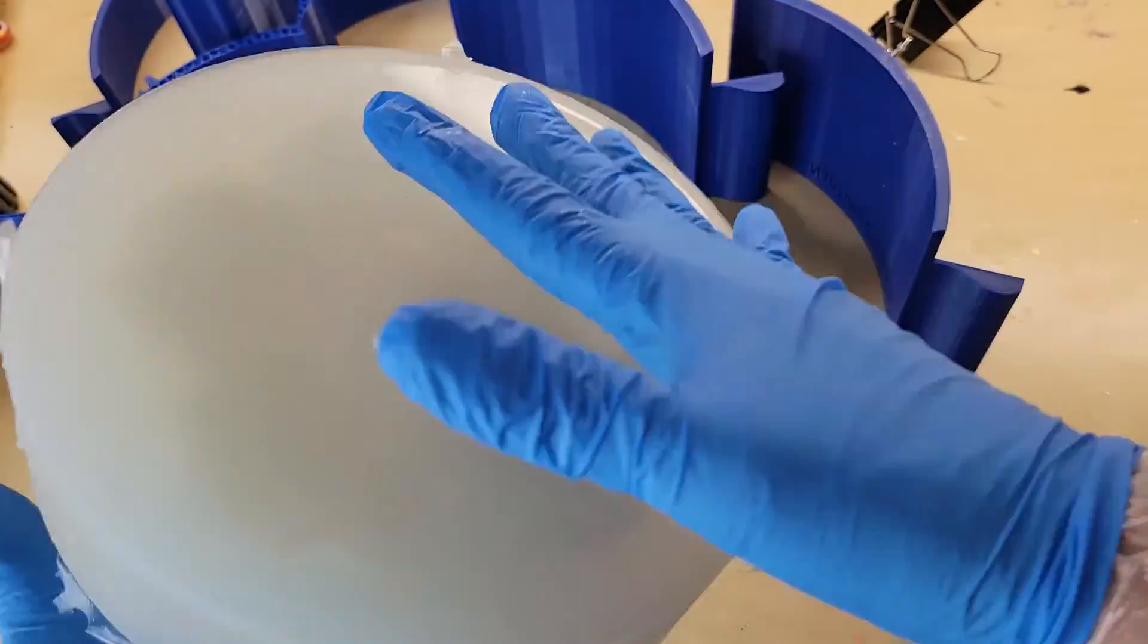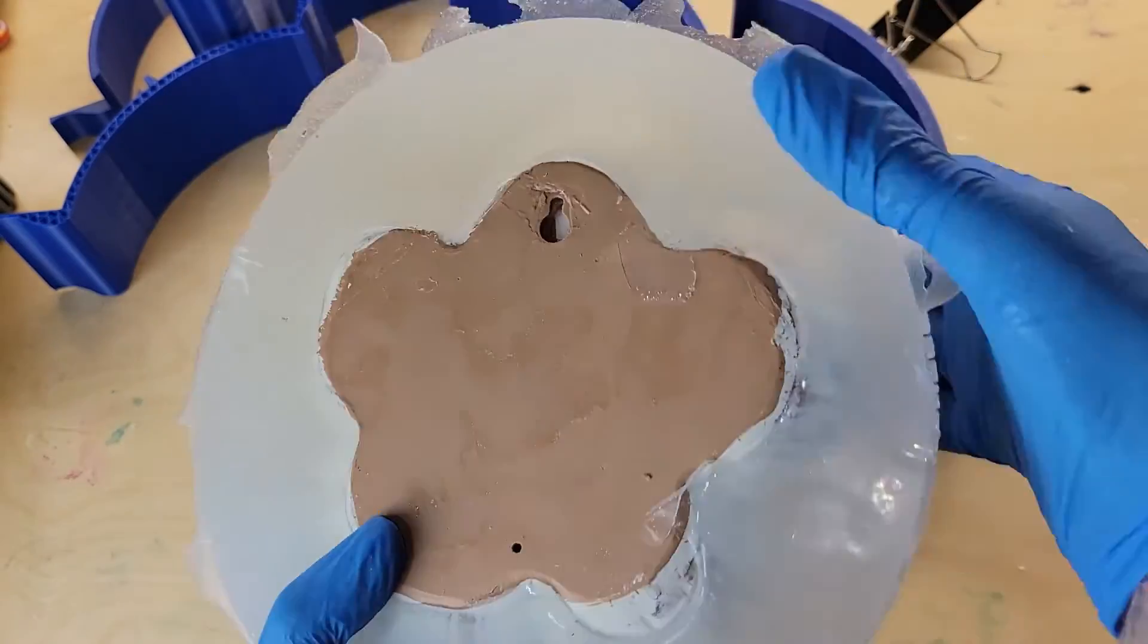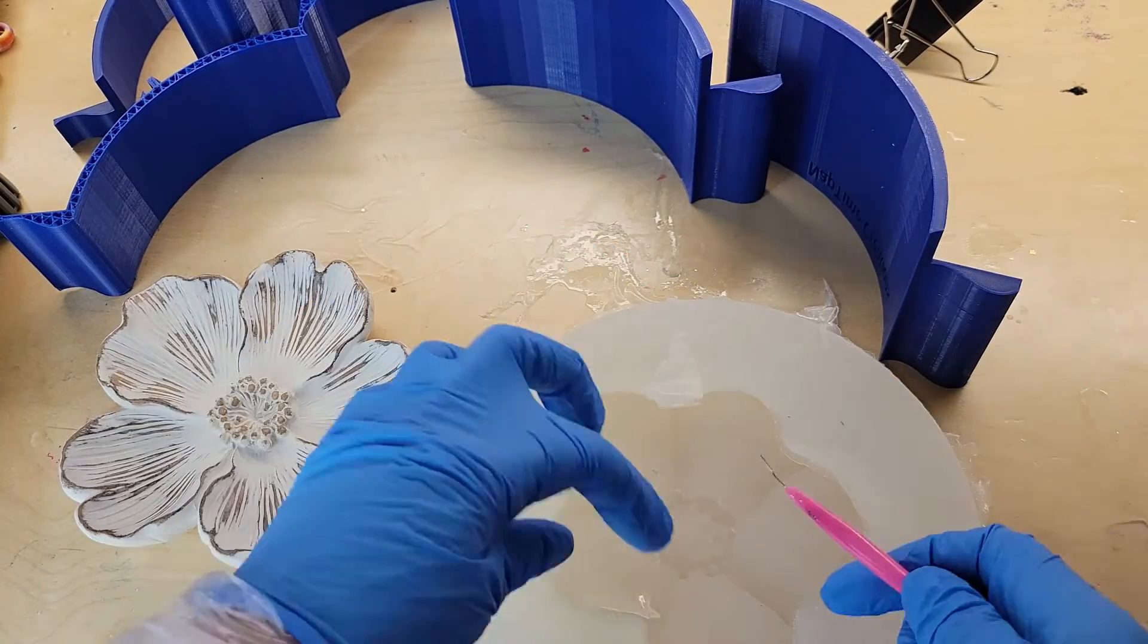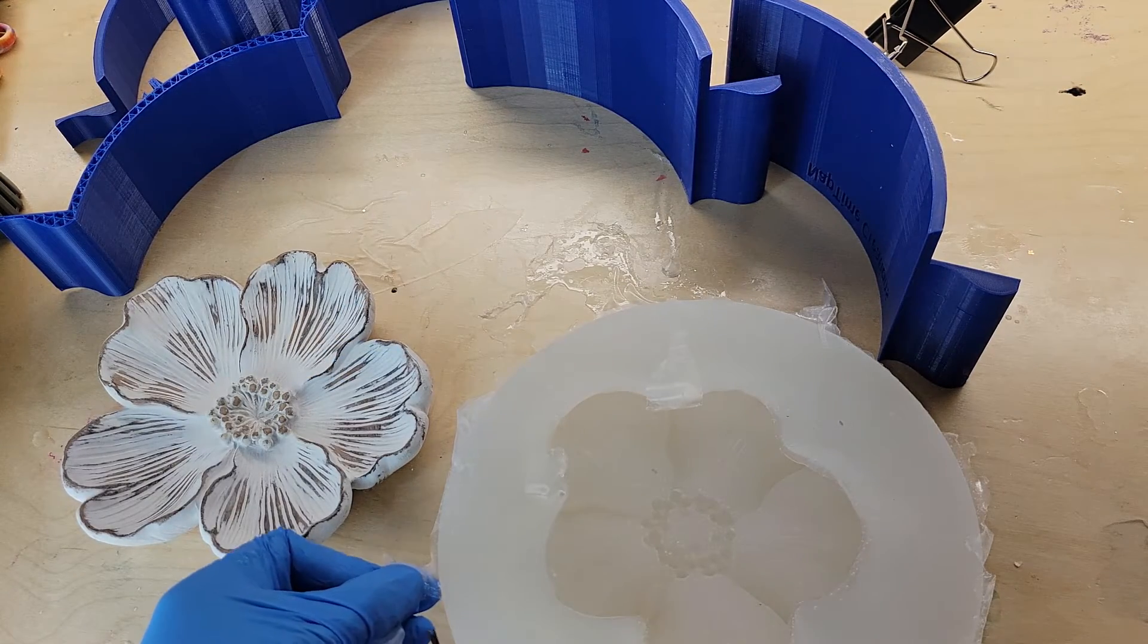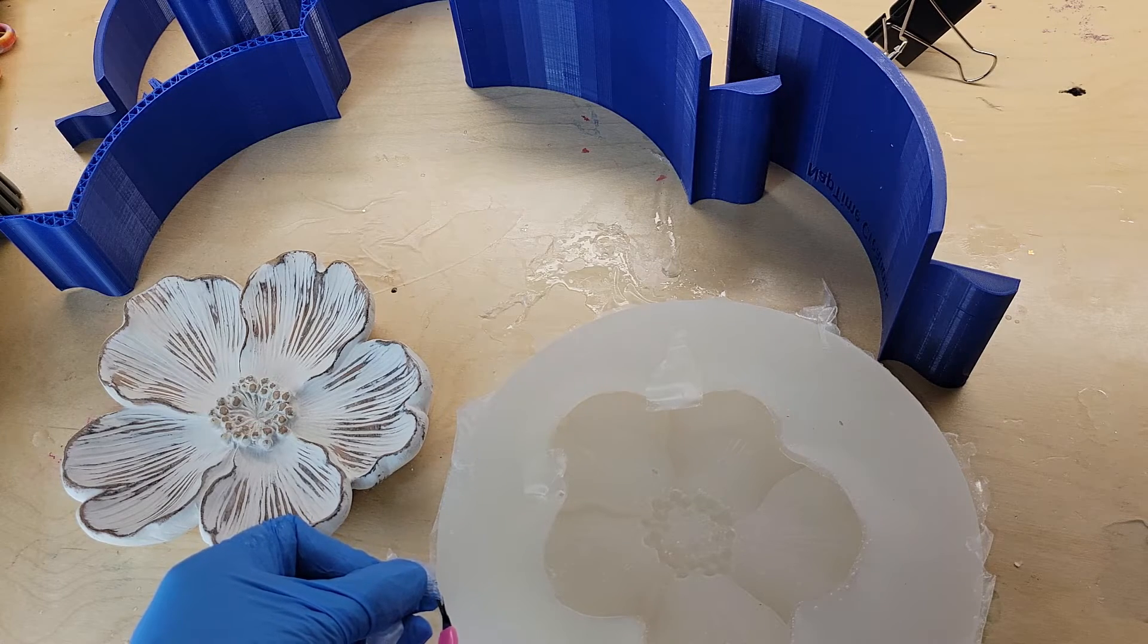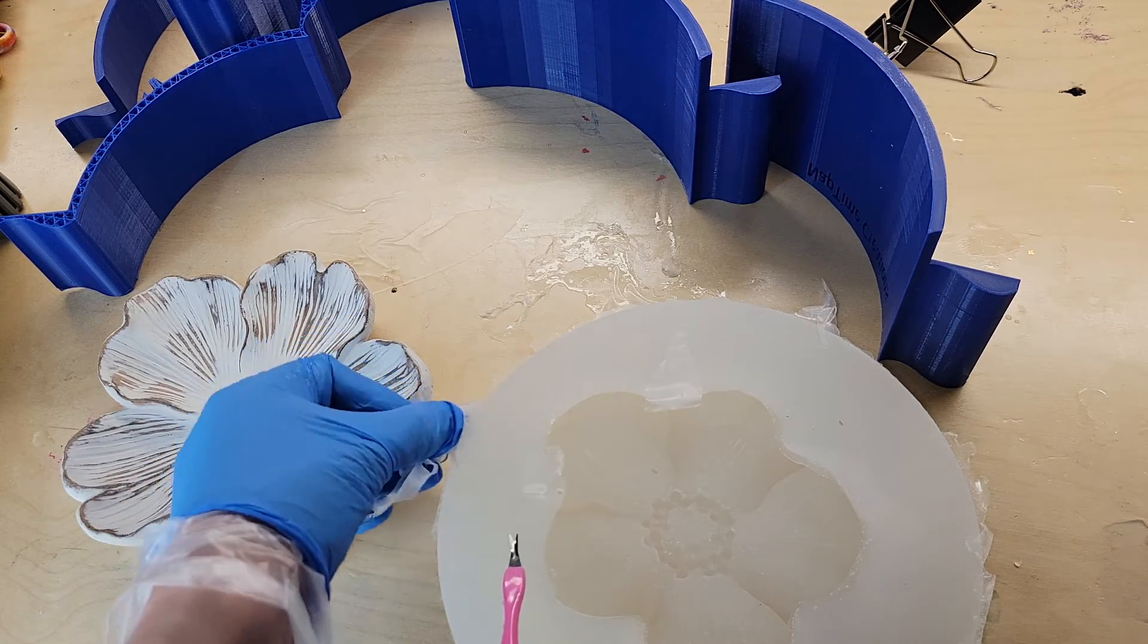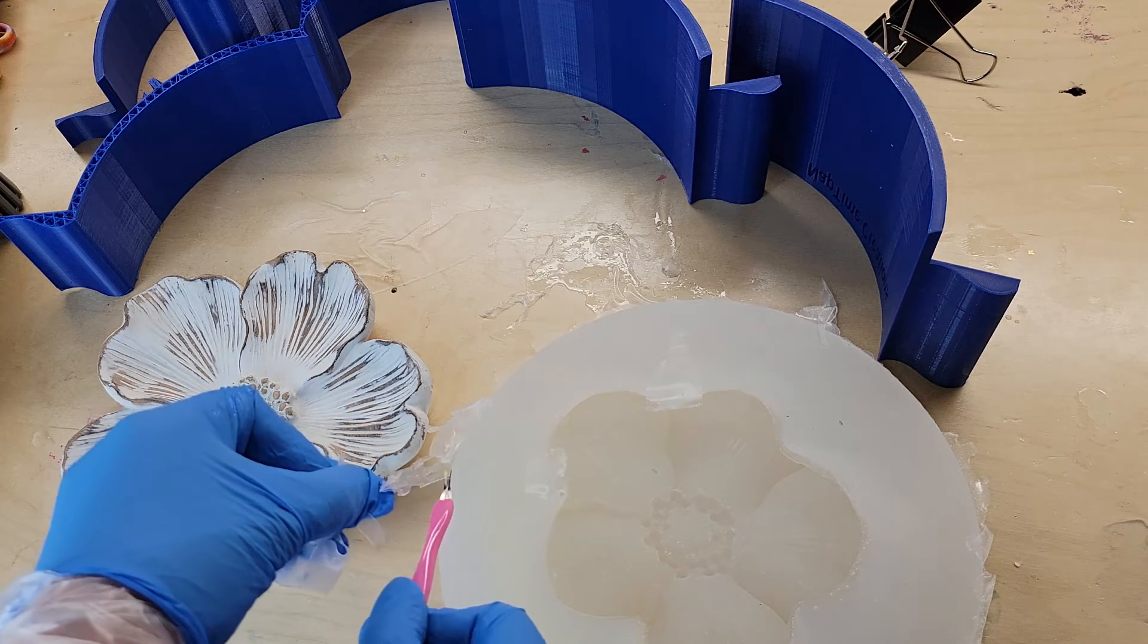This mold ended up being a little bit sticky. I have had that happen before when I use silicone rubber, but it doesn't affect your resin casts. I just wanted to throw that out there. Now I'm going in with a cuticle trimmer, and I'm just going to clean up around the perimeter of the mold, cleaning up any little extra silicone around the perimeter and around the inside cavity of the flower. This flower has a matte finish, so the mold is going to have a matte finish.